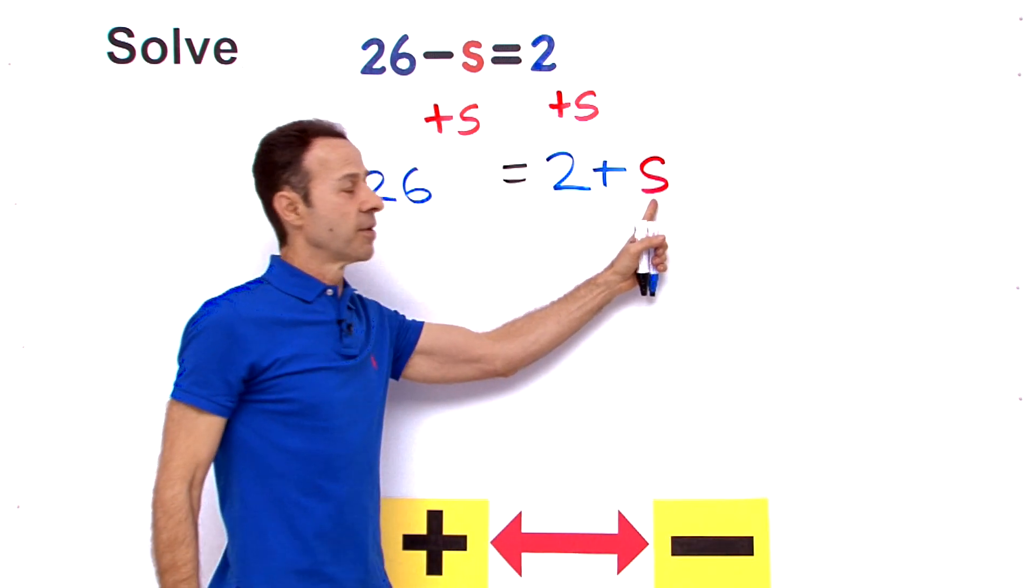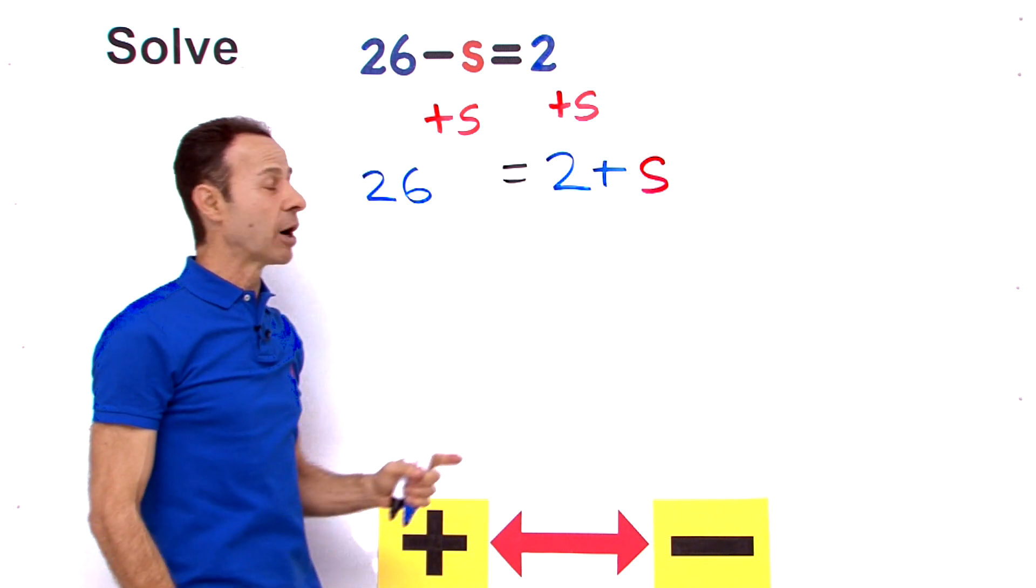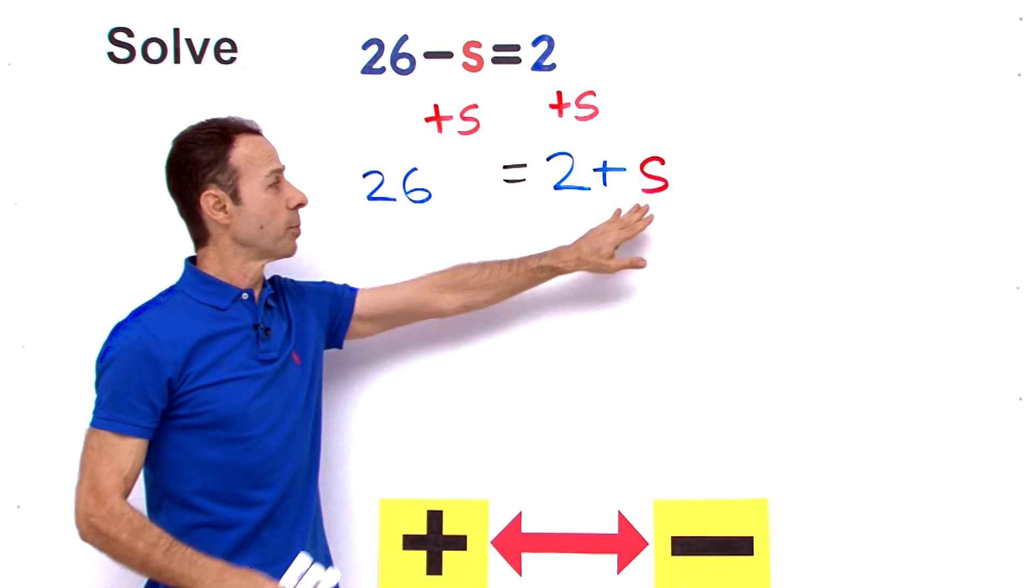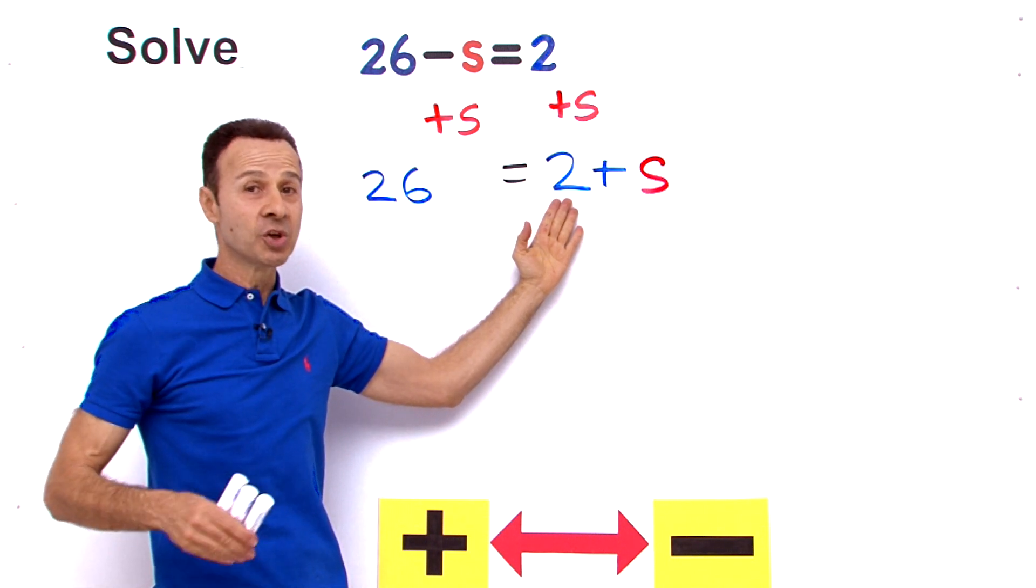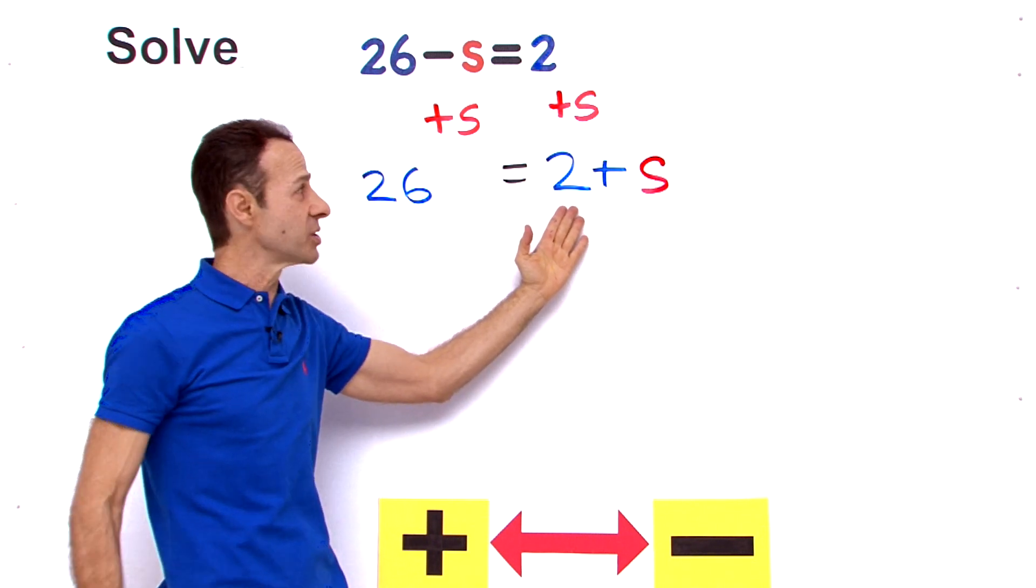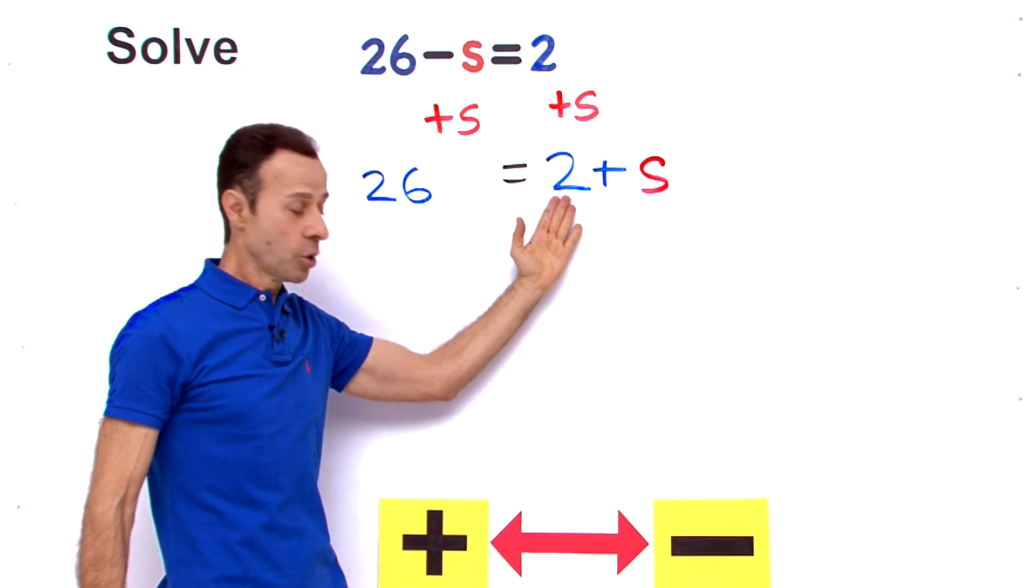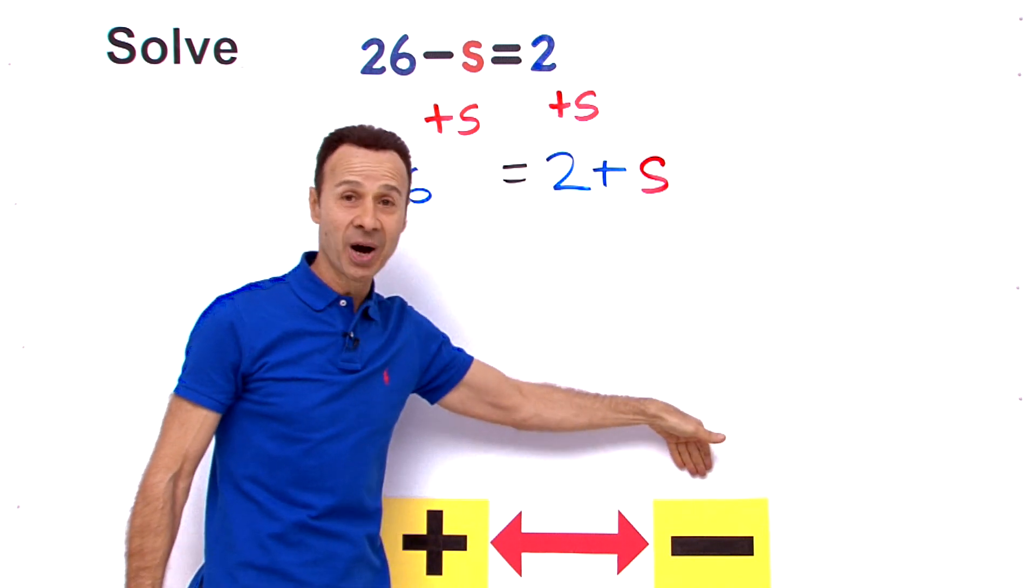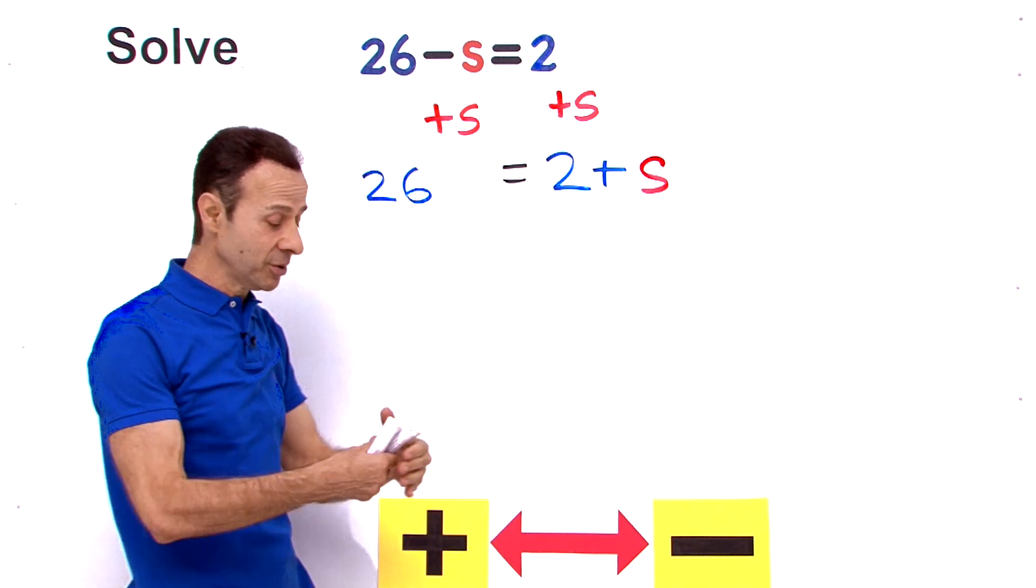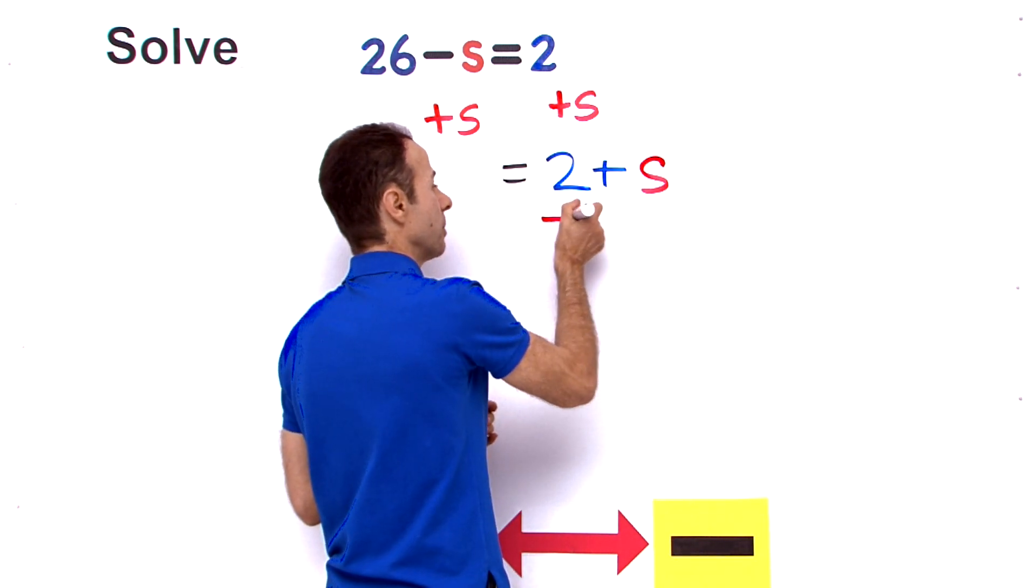Now the variable is a plus s. Now all we have to do is get it all by itself by getting rid of this 2. And in order to get rid of something we need to use the inverse opposite operation. Since that's a plus 2, we look down here at plus and the inverse opposite of plus is minus. So to get rid of that plus 2, we minus 2.